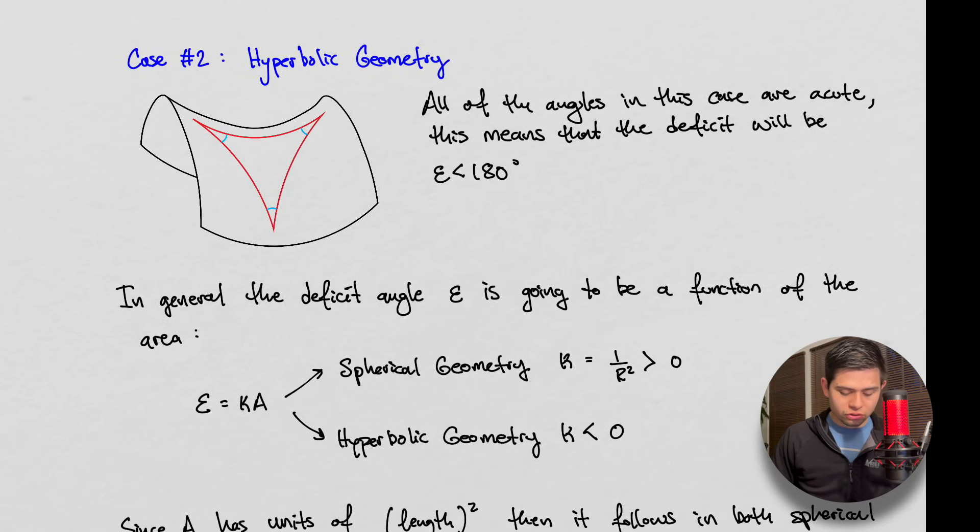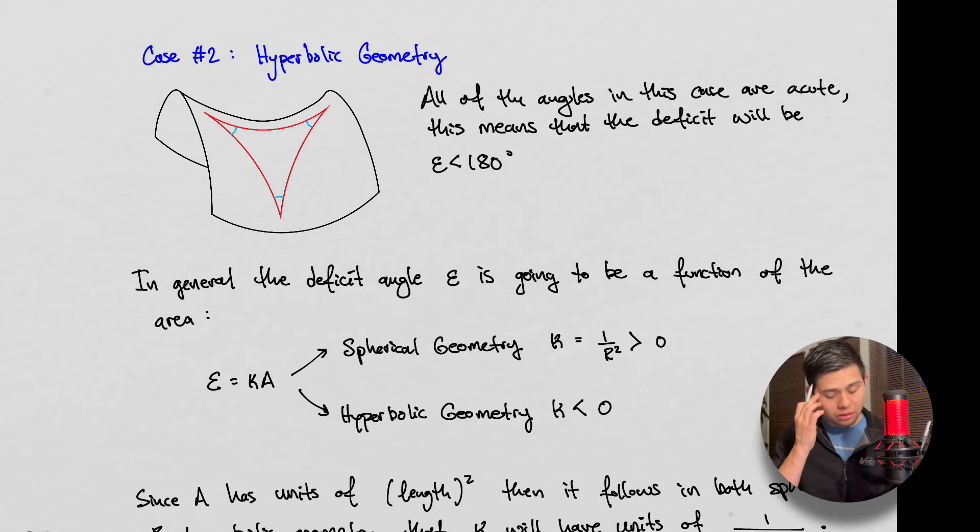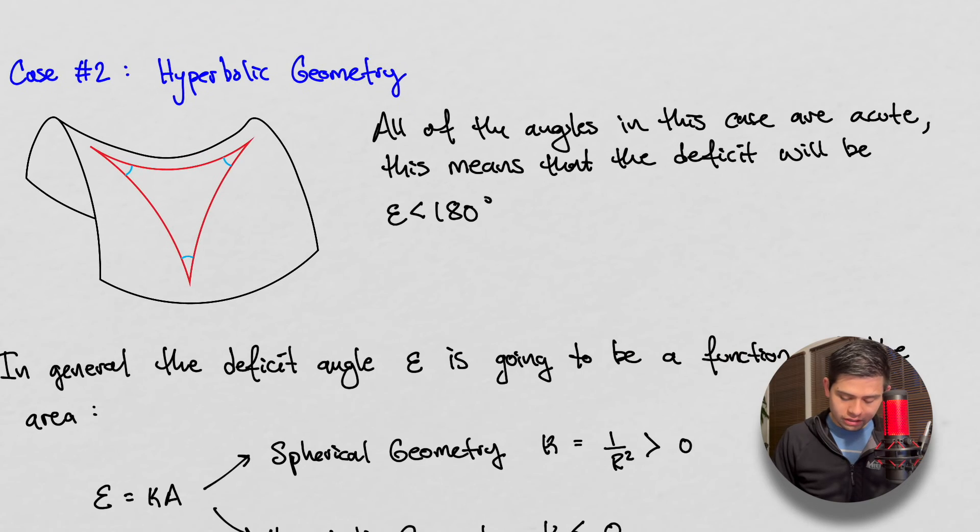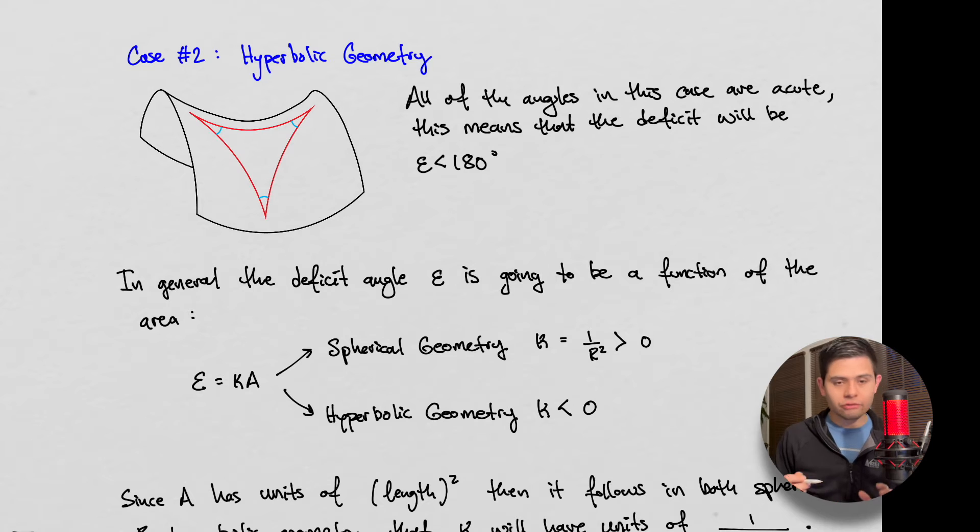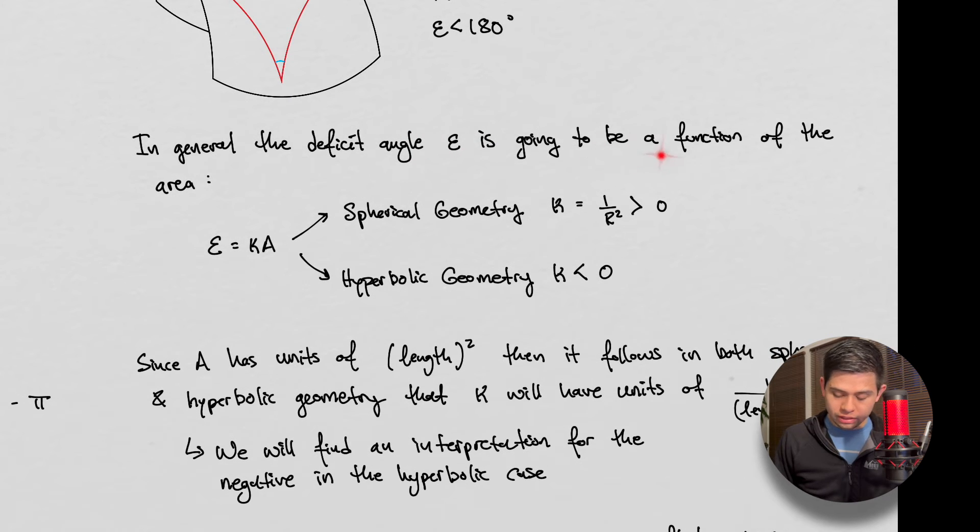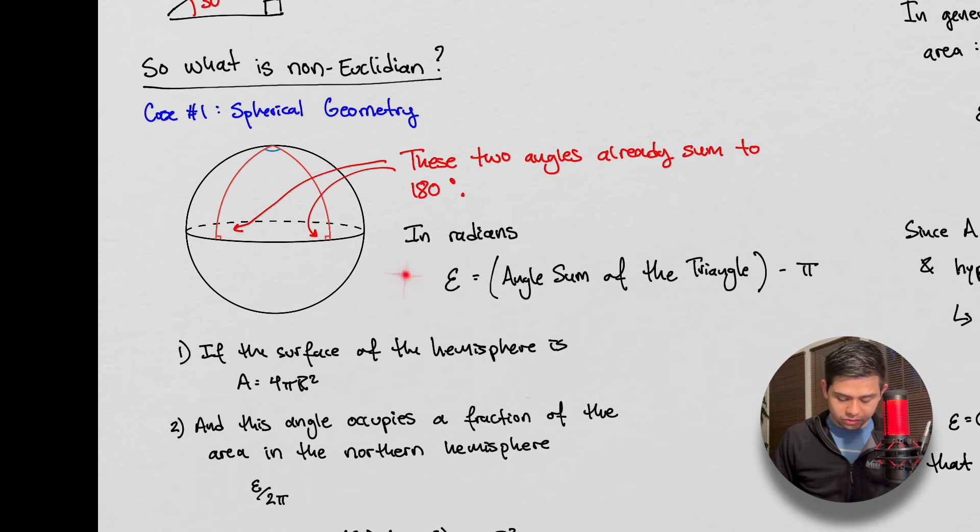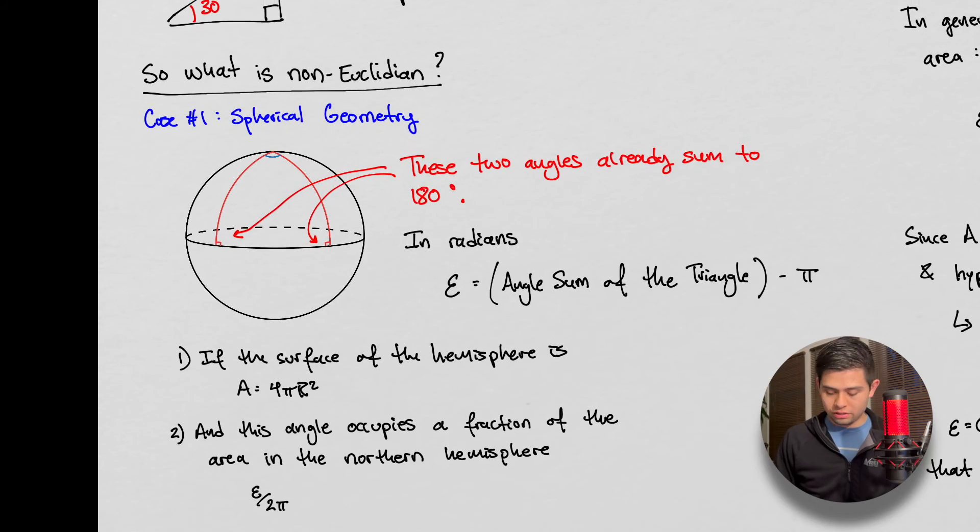Alright, so let's talk about case 2, hyperbolic geometry. In the case of hyperbolic geometry, all the angles in this hyperbola, or this saddle if you will, this is a hyperbola in three-dimensional space essentially. All of the angles in this case are acute. None of them exceed 90, and this means that the deficit angle can be less than 180. So in general, the deficit angle epsilon is going to be a function of the area. So now we're talking more in general now. We've seen in the hyperbolic case that epsilon is going to be less than 180, and in the spherical case epsilon is going to be greater than 180. And this is going to be a hallmark marker in telling us if we're on flat space, or if we're considering flat geometry or curved geometry, different curved geometry.